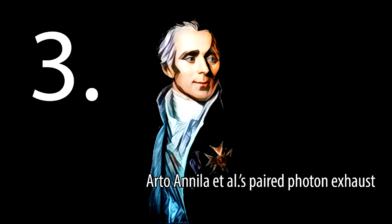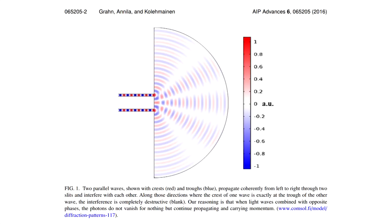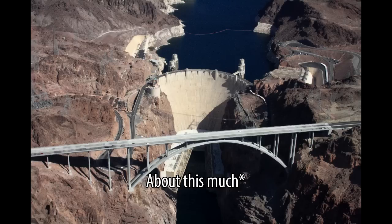Number 3. Finnish physicist Arto Annila has suggested that the EMDrive does have an exhaust made up of photons that destructively interfere with one another. He mentions the two-slit experiment: if the crest of one wave meets the trough of another, they interfere destructively and cancel out. So the exhaust of the EMDrive would comprise photons that are destructively interfering everywhere. Here's the problem: if the photons destructively interfere everywhere outside the cavity, the probability of finding them anywhere outside the cavity is zero — which means they're just not there. And even if they were, this would be a photon thruster, so you'd still have to pay 300 megawatts for each newton of thrust.